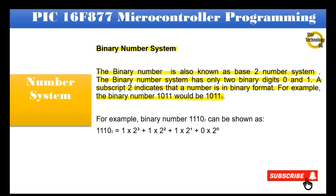For example, binary number 1110 base 2 can be shown as: 1110 base 2 = (1 × 2³) + (1 × 2²) + (1 × 2¹) + (0 × 2⁰).